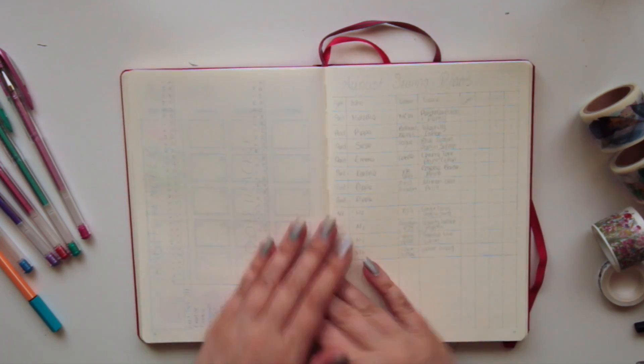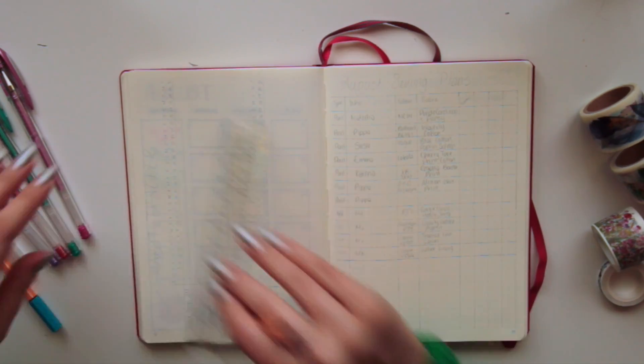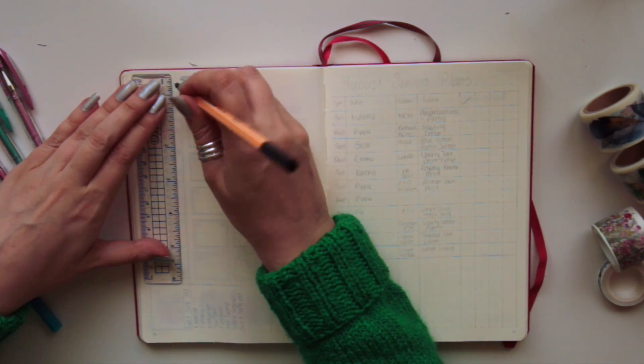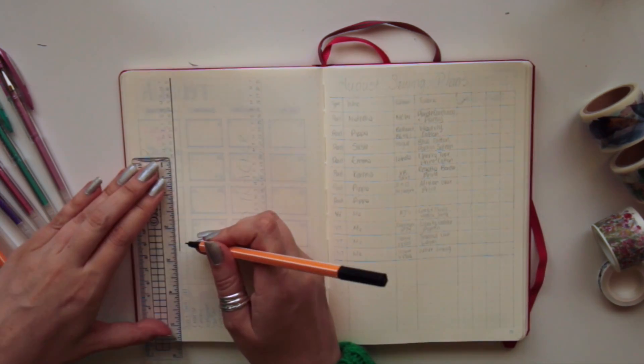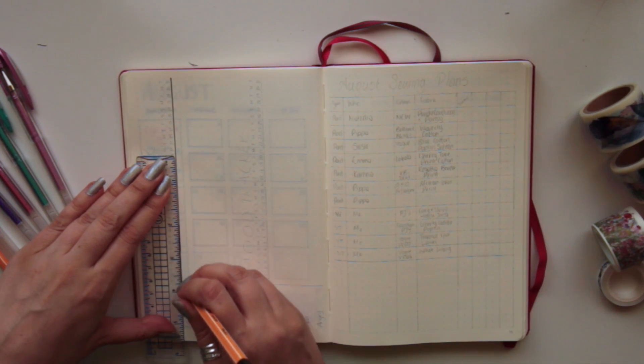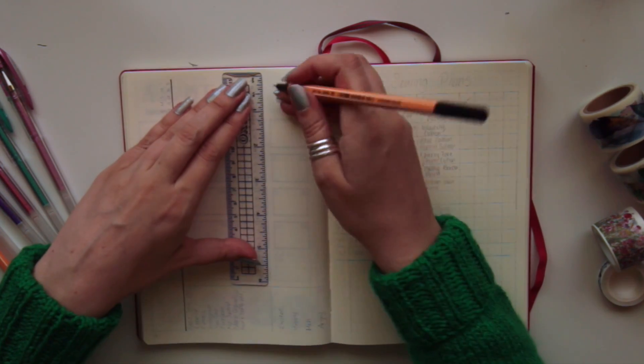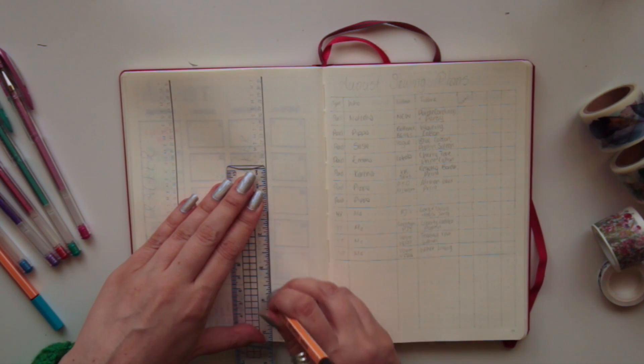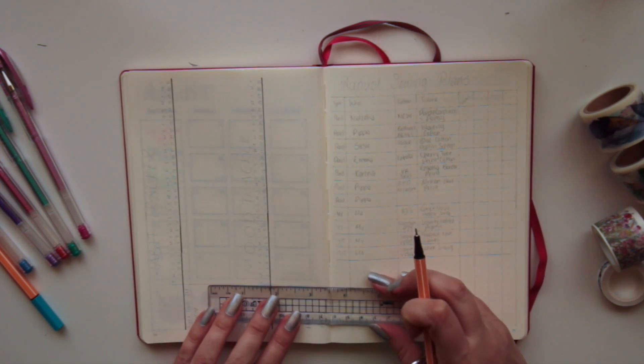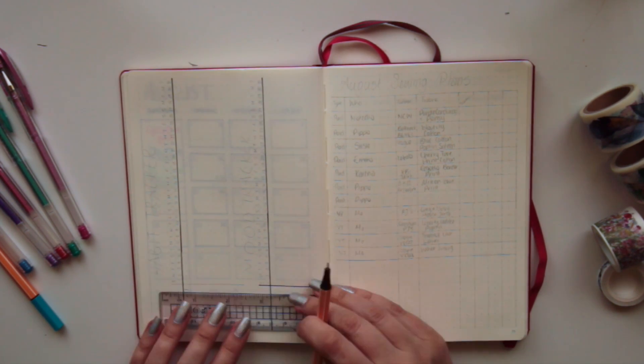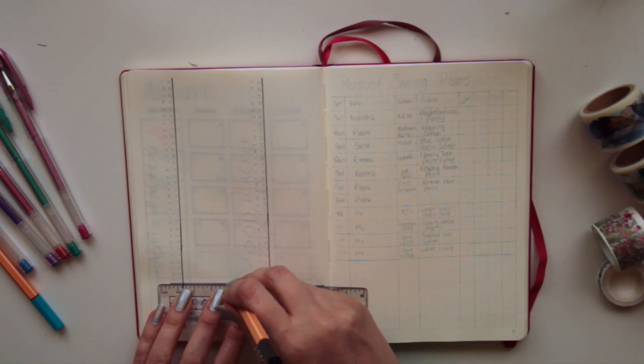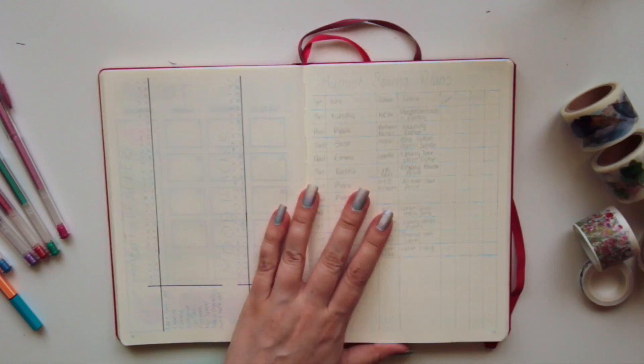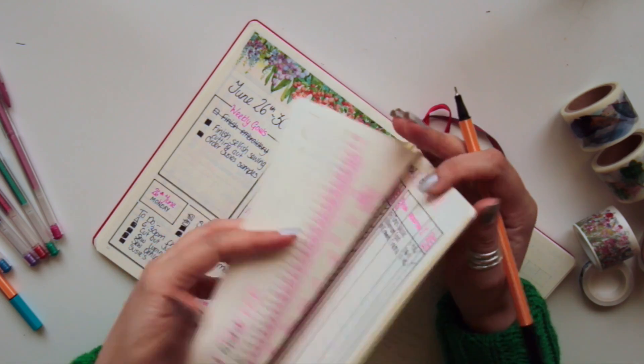Next up it's my habit and mood tracker. Again I've gone through and penciled everything in just to make this video quicker to film. I'm coloring in or drawing in the lines with my 15 centimeter ruler, which doesn't quite reach to the end of the page, so I should have got my longer one out.